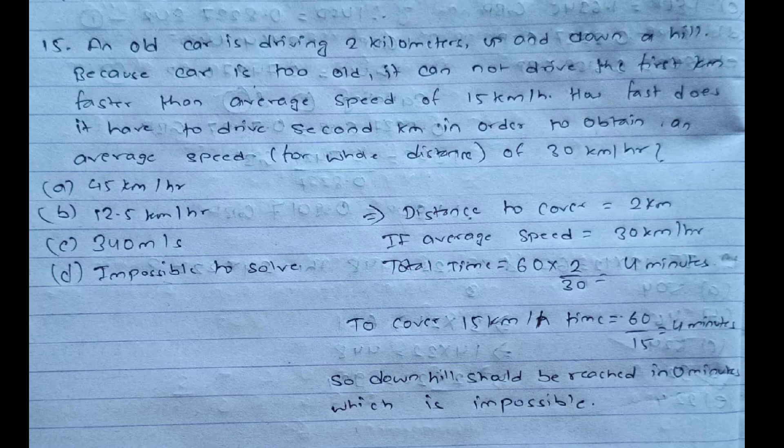Question fifteen: an old car is driving 2 kilometers up and downhill. The car cannot drive the first kilometer faster than an average speed of 15 km/h. How fast does it need to drive the second kilometer to achieve an average speed of 30 km/h for the whole 2 km distance? The total time required for 2 km at 30 km/h is 4 minutes. However, covering the first kilometer at 15 km/h already takes 4 minutes — leaving zero time for the second kilometer. Therefore the correct answer is option D: impossible.